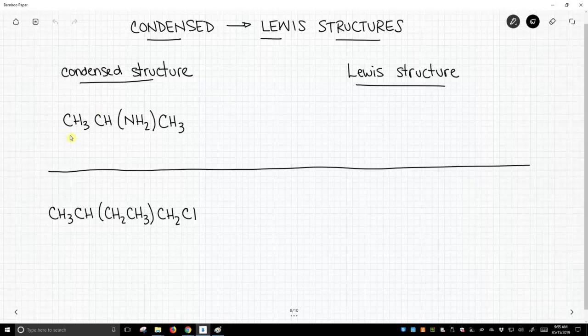So this first one has four non-hydrogen atoms, sometimes people say four heavy atoms, and we have to convert this to a Lewis structure. So again, these condensed structural formulas are written from left to right, so let's read them from the left to the right.